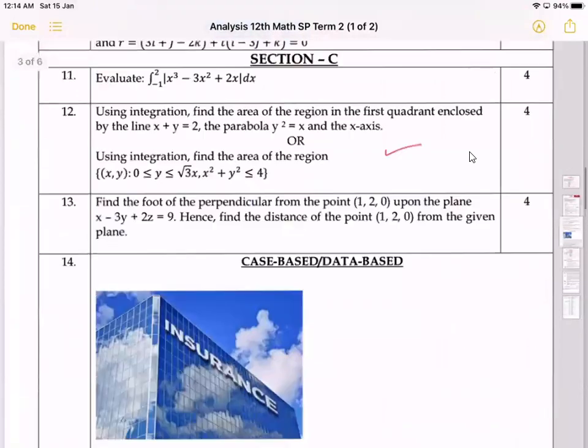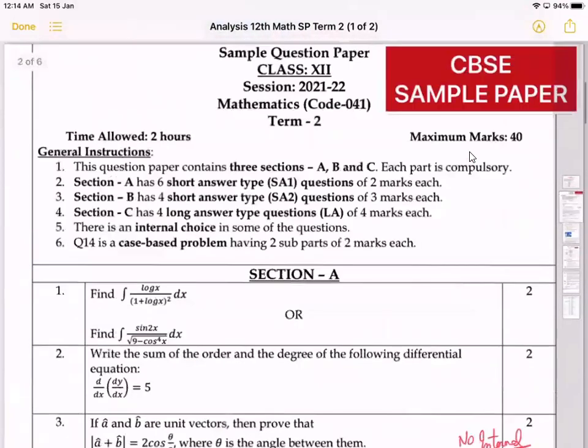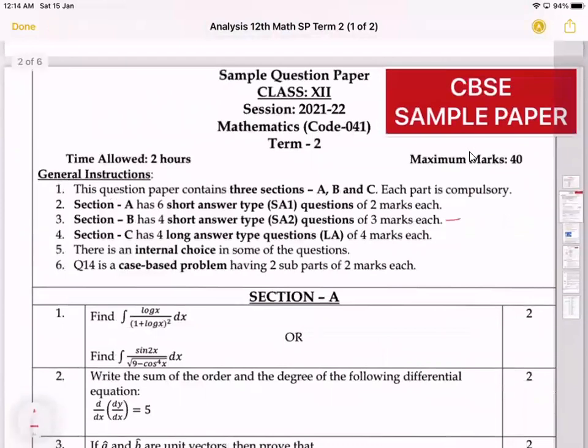But our today's concern is about the sample paper. Now, if you see the internal choice, which is the most crucial part, you will get two internal choices in SA2 and one internal choice in SA3. So if I define the whole question paper, six plus four plus four, 14 plus three internal choices, the total questions which will come in your paper will be 17 including internal choices, but total questions in the question paper will be 14. And they will give you 40 marks in this.